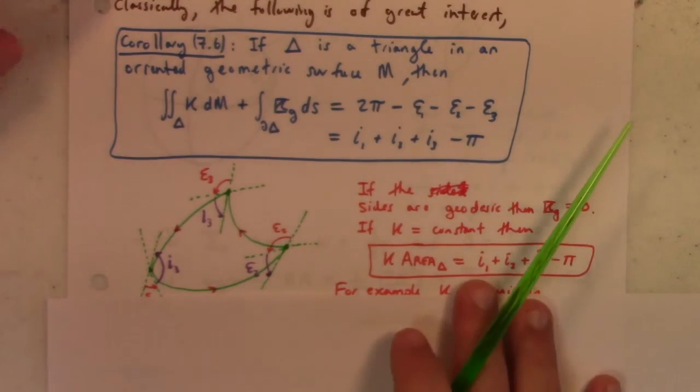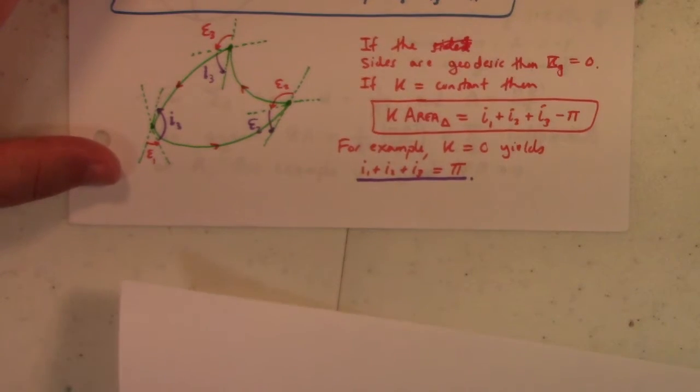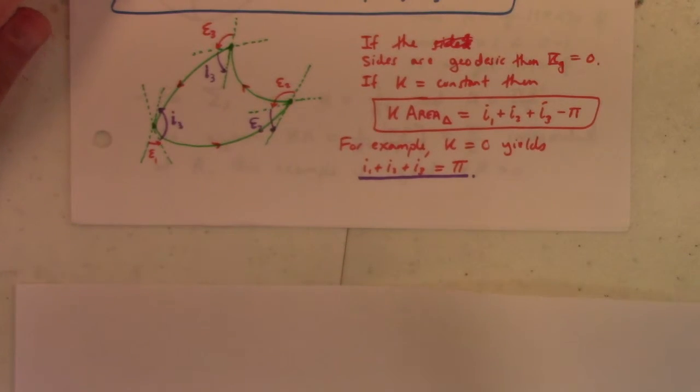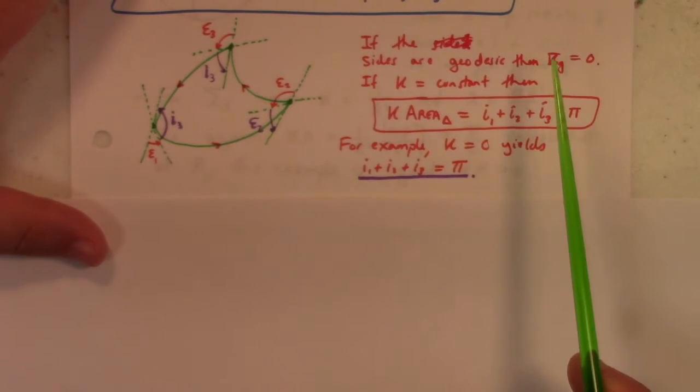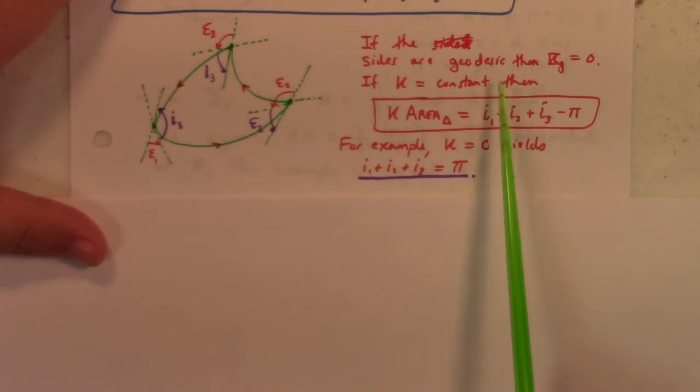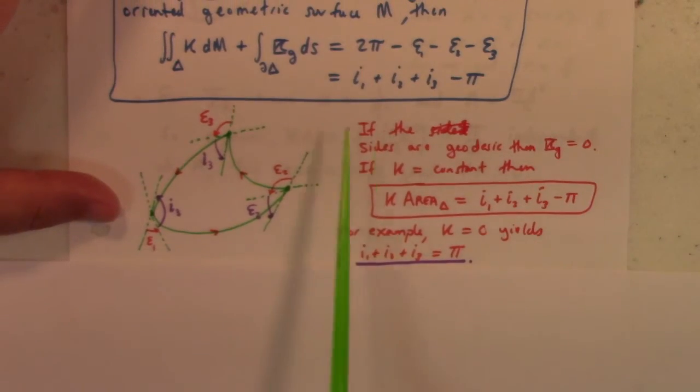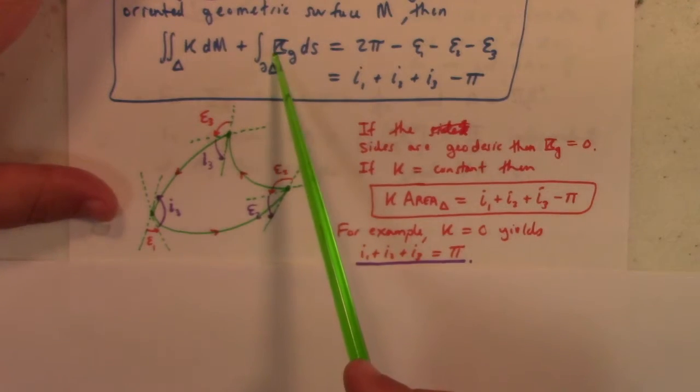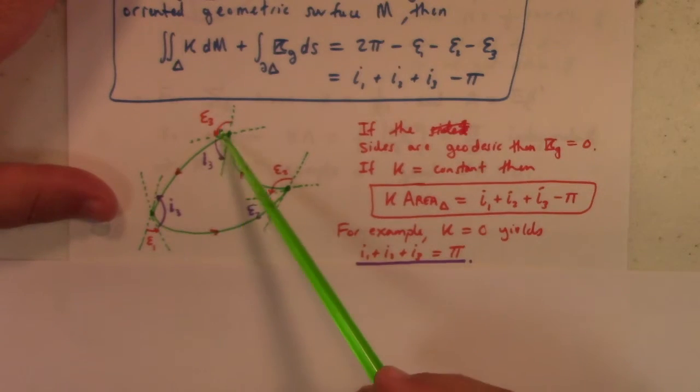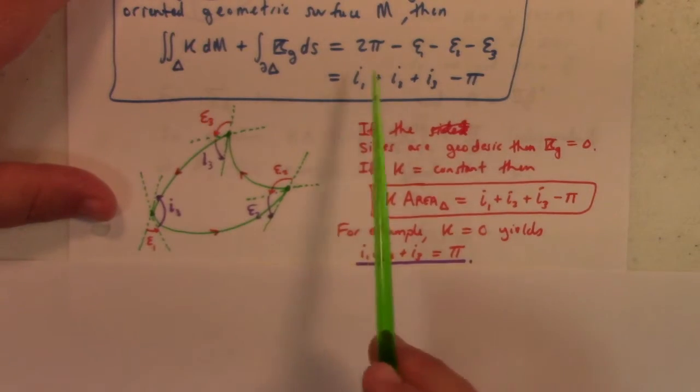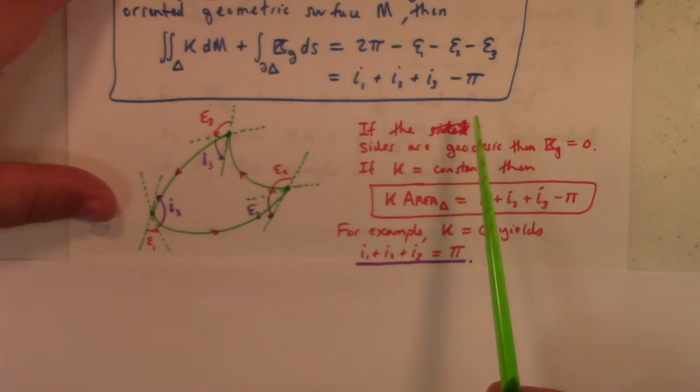That means there's a relation between the area, interior angles of a triangle, and the curvature of space. In particular, if we have a triangle with geodesic sides, then geodesics have geodesic curvature zero—they're generalized lines. If geodesics form the sides of the triangle, then this term drops out and you just have that the integral of the total Gaussian curvature equals the sum of the interior angles minus π.